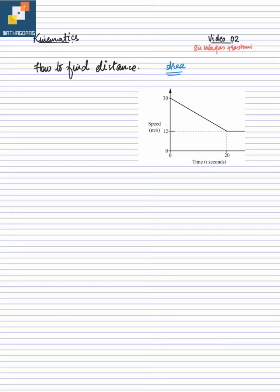If I complete the line here, now I have a triangle and a rectangle. So basically, if I need to find the distance, I need to find the area of these two shapes. Firstly, if I start with the triangle, the triangle area is 1/2 base multiplied by height.